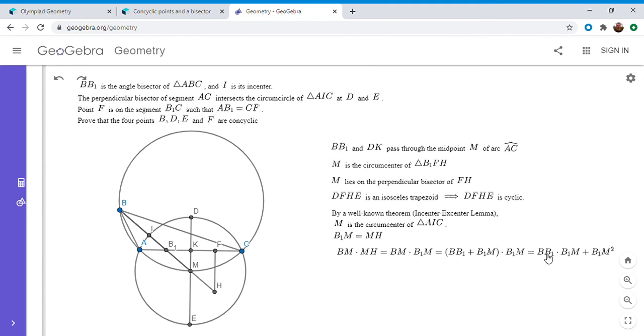And the whole reason why I broke it up is because BB1 times B1M, we can calculate that using power of a point. So BB1 times B1M, which is this guy, is AB1 times B1C. So I'm going to write out a little bit more algebra. So this is what I just said. So BB1 times B1M is AB1 times B1C.